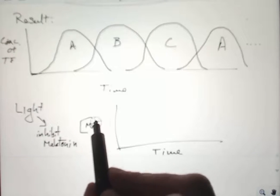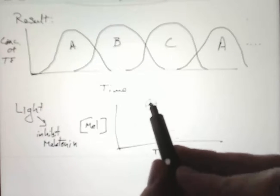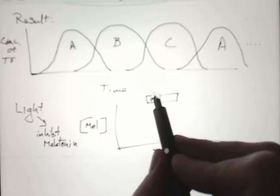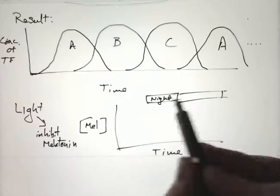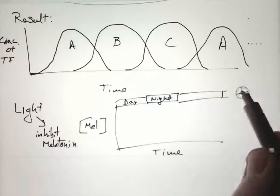The system can work if, for example, we use light, which inhibits melatonin. Melatonin is produced at night. So at night, high melatonin. During the day, low melatonin.